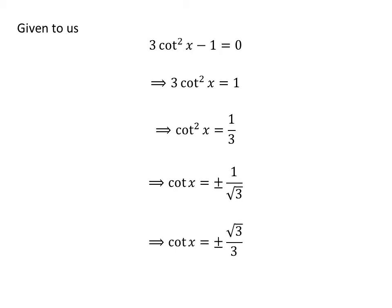To rationalize the denominator, we multiply the numerator and the denominator by the common factor square root of 3. Since multiplying numerator and denominator by a common factor does not change the value of the fraction, we get cotangent of x is equal to plus and minus square root of 3 upon 3.